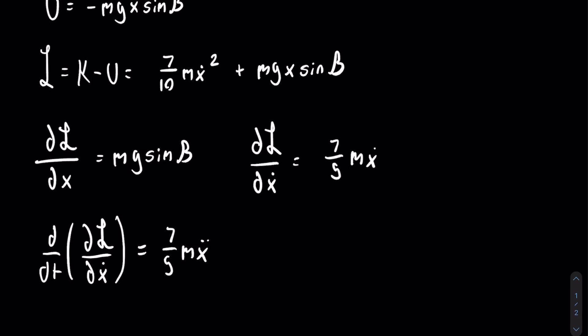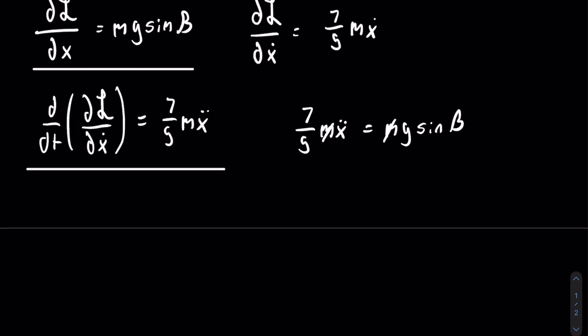From our equation, we now have the two things that we need to get the equation of motion. So that is those two, and we can just equate them now, and we will get that seven-fifths m x double dot is equal to mg sine of beta. Then, as you can see, the m's will cancel out, and we will be left with x double dot is equal to five-sevenths g sine of beta.